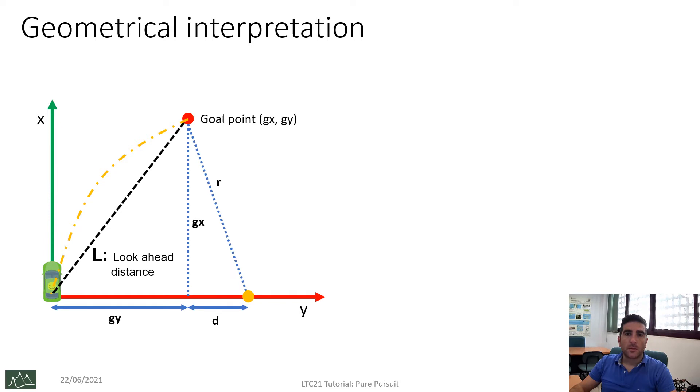We choose to constrain the center of the arc to be on the y-axis of the vehicle. So, if we put the center here, we have the radius of the arc, and basically this is the GY coordinate or the absolute value of GY, and this is the GX coordinate or the absolute value of GX. So, now, let's see some quick math to solve this value.